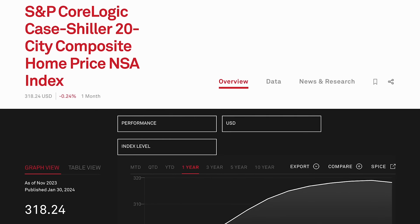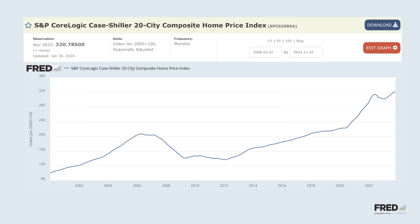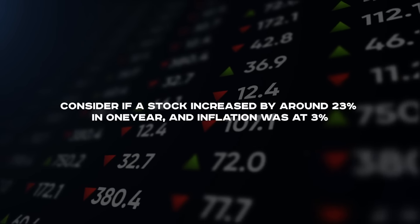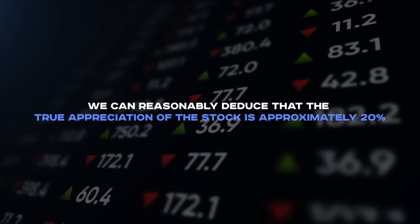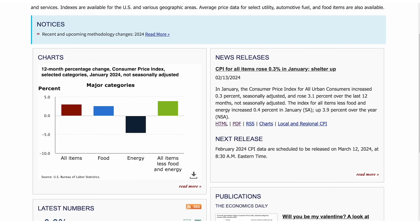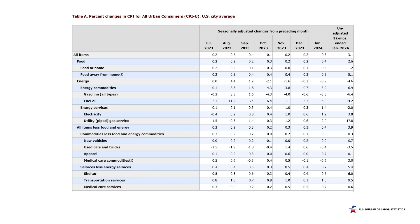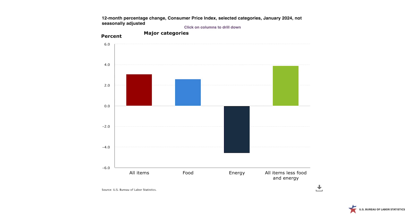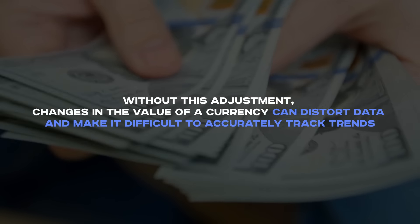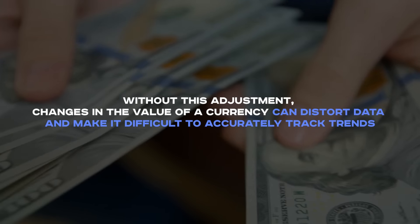Let's examine the S&P Case-Shiller 20-City Composite Home Value Index. This updated monthly index monitors price fluctuations in residential real estate across 20 significant U.S. metropolitan areas. The unique aspect of this graph is that it is adjusted for inflation, so the impact of inflation is eliminated from the data. For instance, consider if a stock increased by around 23% in one year and inflation was at 3% — we can reasonably deduce that the true appreciation of the stock is approximately 20%. The Consumer Price Index is the standard measure of inflation in the United States, tracking changes over time in consumer prices for goods and services such as housing, food, and energy. Adjusting data for inflation is important because it allows for more accurate comparisons over time; without this adjustment, changes in the value of a currency can distort data and make it difficult to accurately track trends.